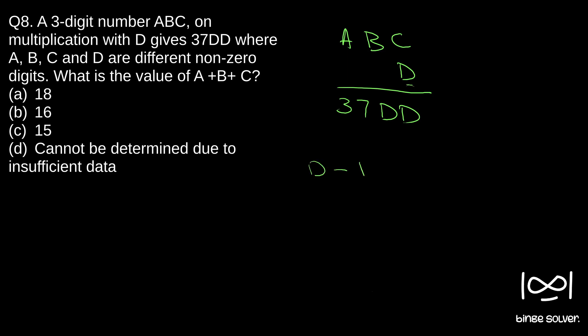It is given ABC is a three-digit number and when we multiply with D, we get 37DD. Now, what are the possibilities for D? D can take values from 1, 2, 3, 4, 5, 6, 7, 8, 9. These are the nine possibilities D can have. The result, the product we get, the first two digits is 37. So from this, we can eliminate few of the options.